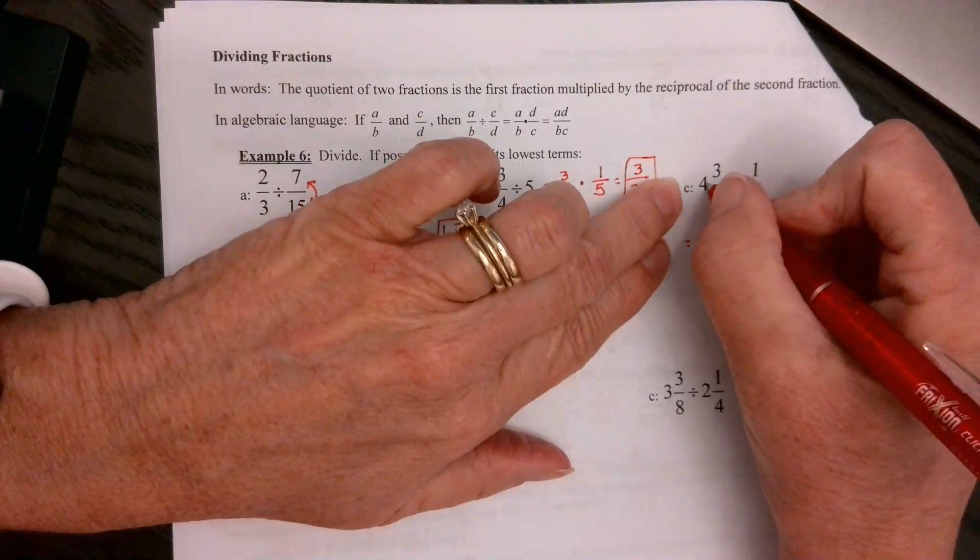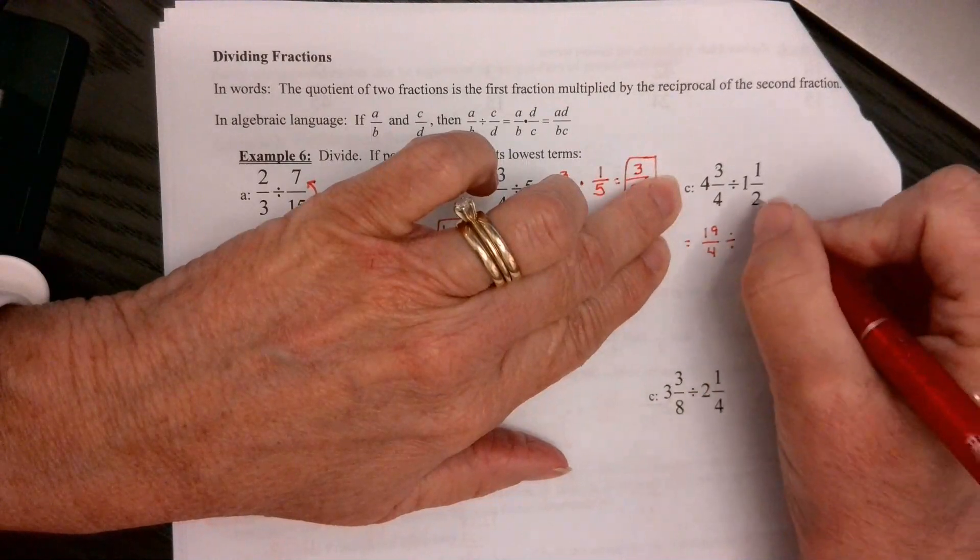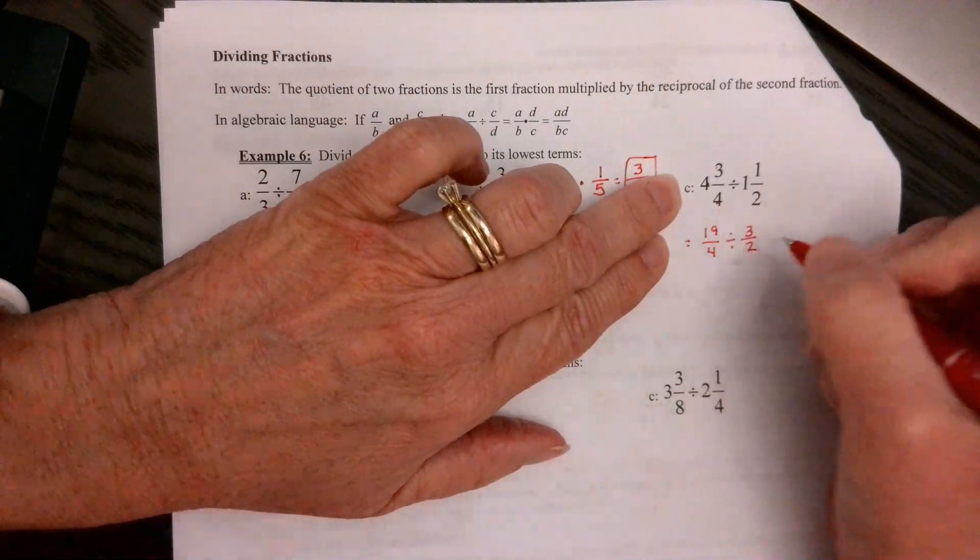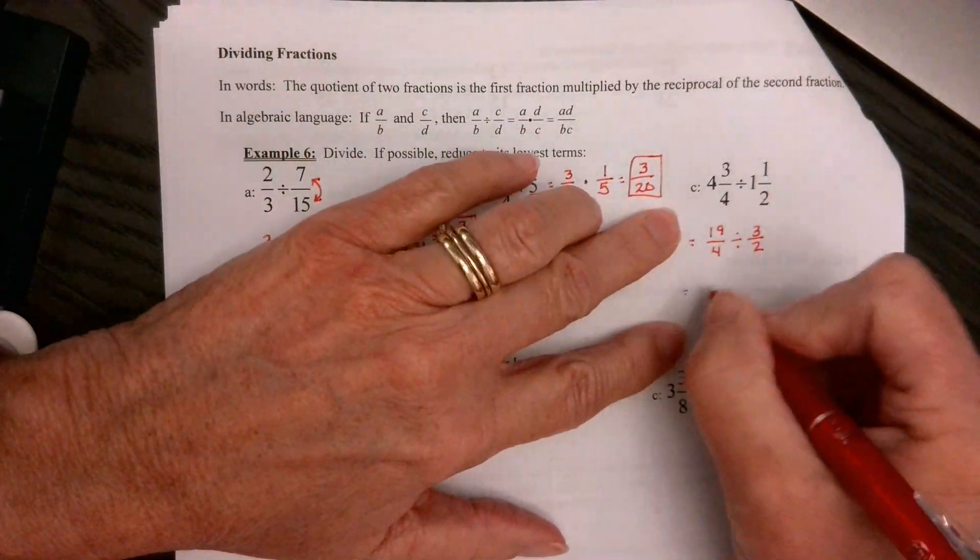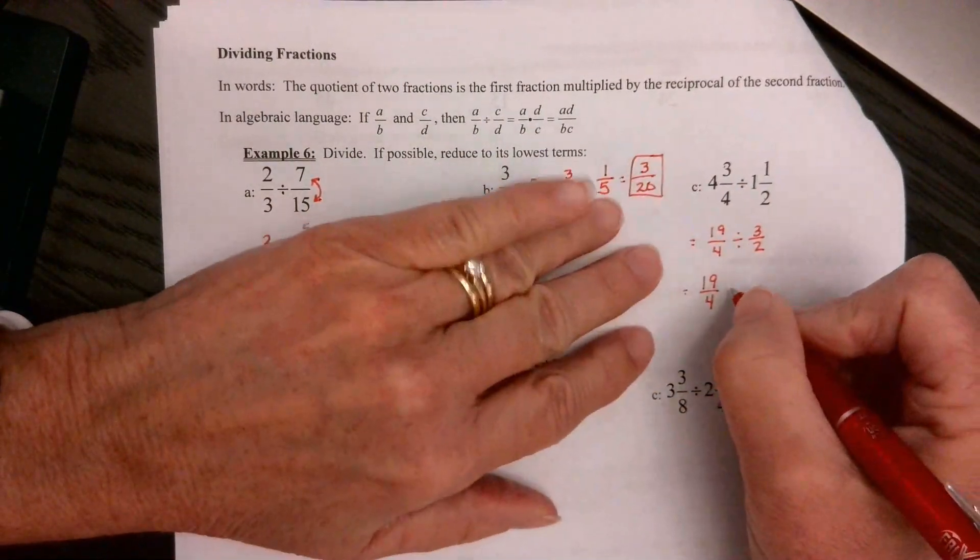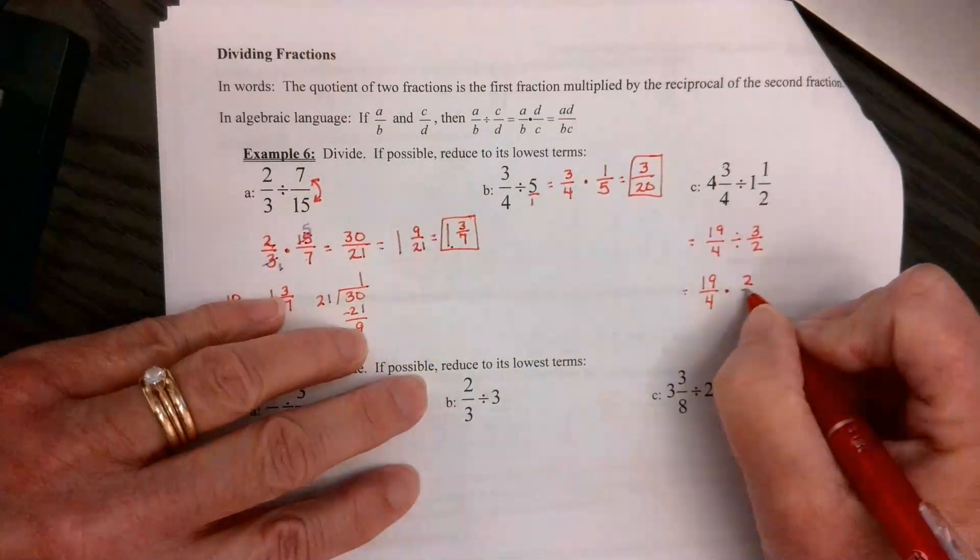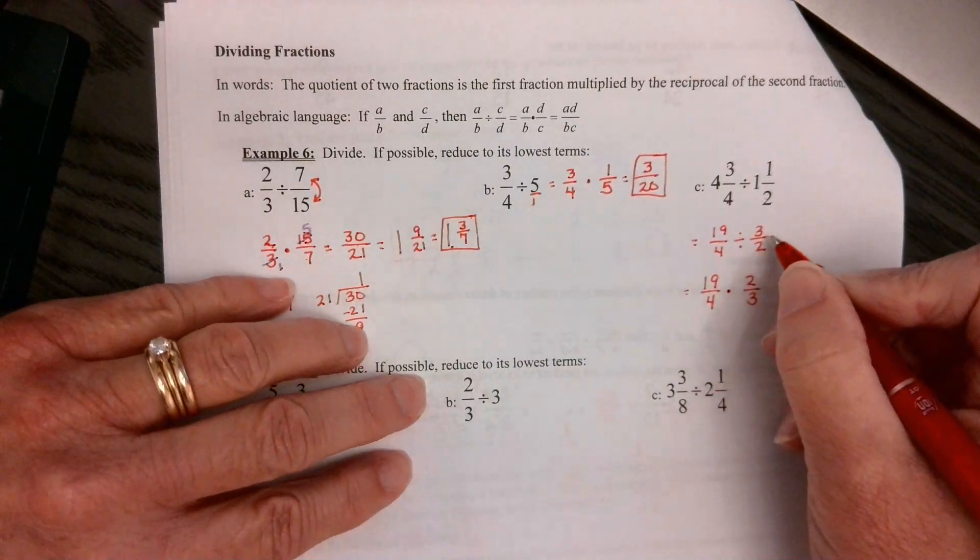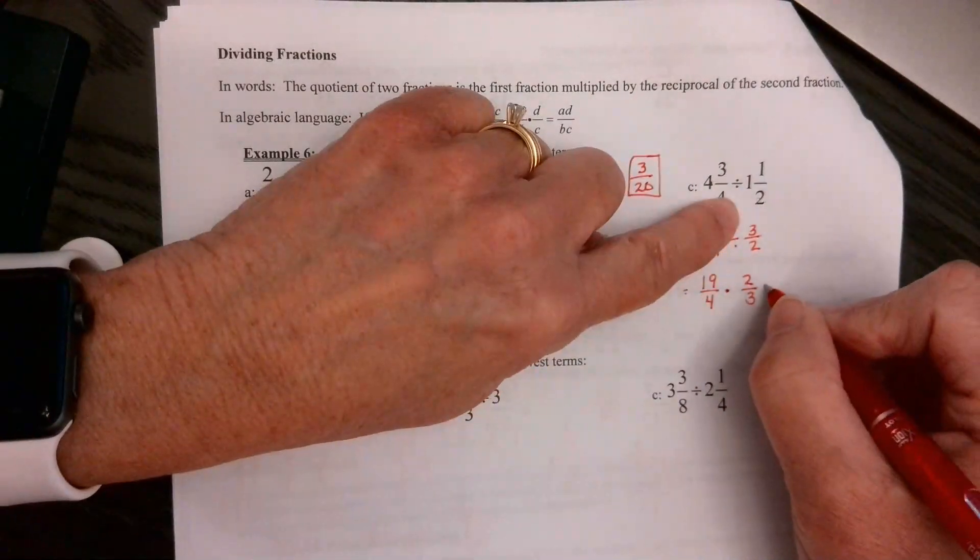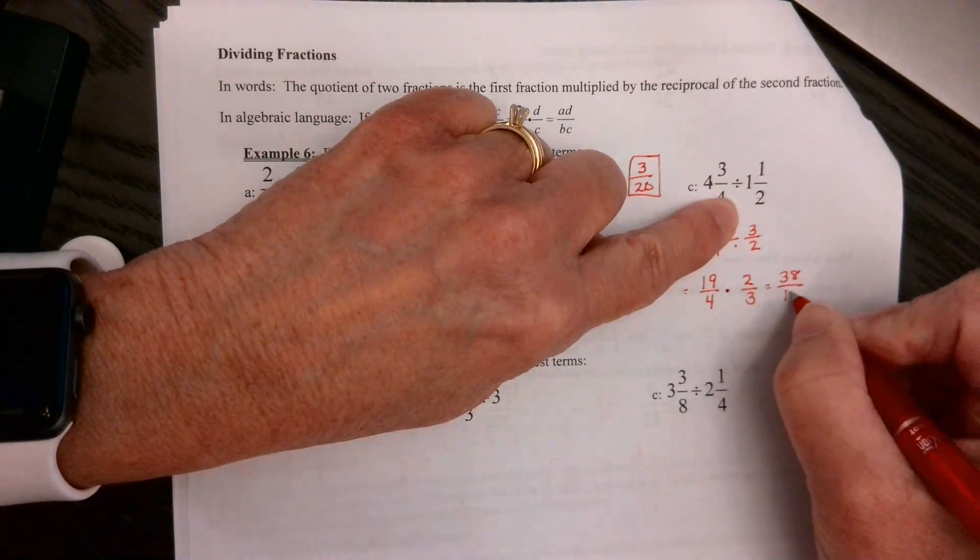What I would do is I'd change these first before flipping. 4 times 4 is 16, plus 3 is 19 over 4, divided by 2 times 1 is 2, plus 1 is 3 over 2. Now I will rewrite the first fraction of 19/4. I'm going to change the division to multiplication, and then I'm going to flip the second one to 2/3, multiplying by its reciprocal. I say flip, but it's still meaning the reciprocal. Okay, then 19 times 2 is 38, and 4 times 3 is 12.